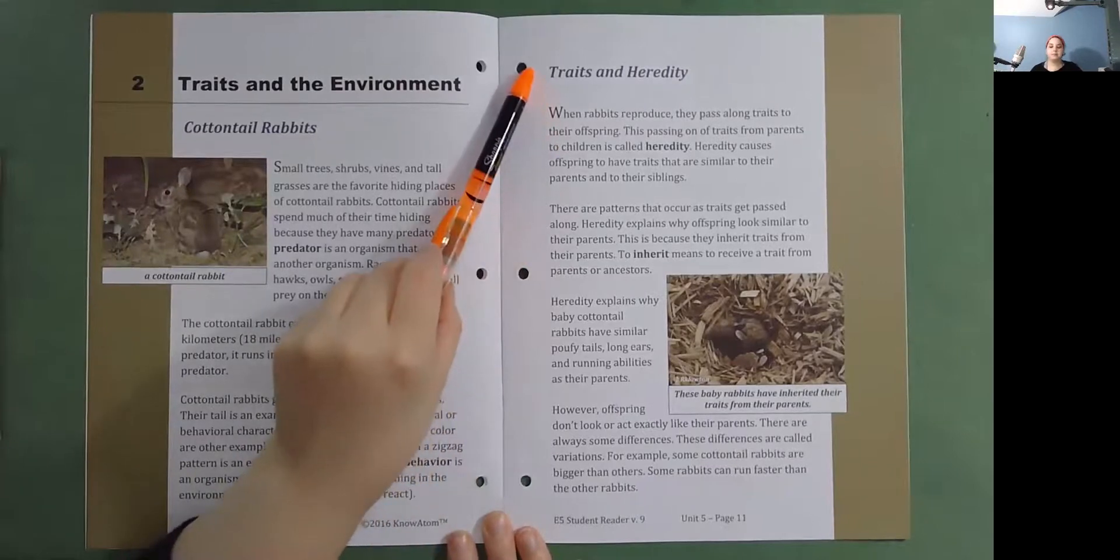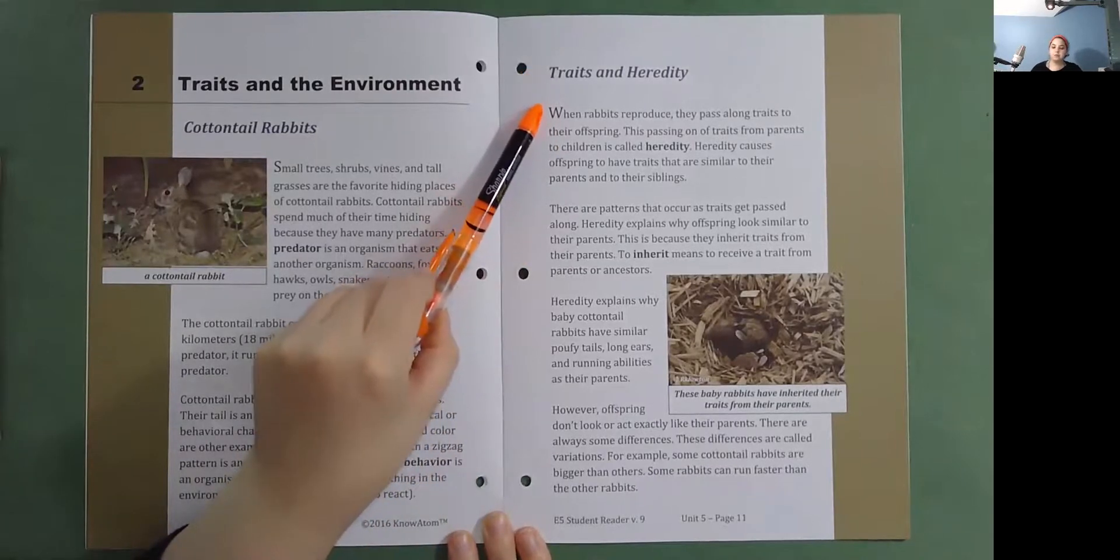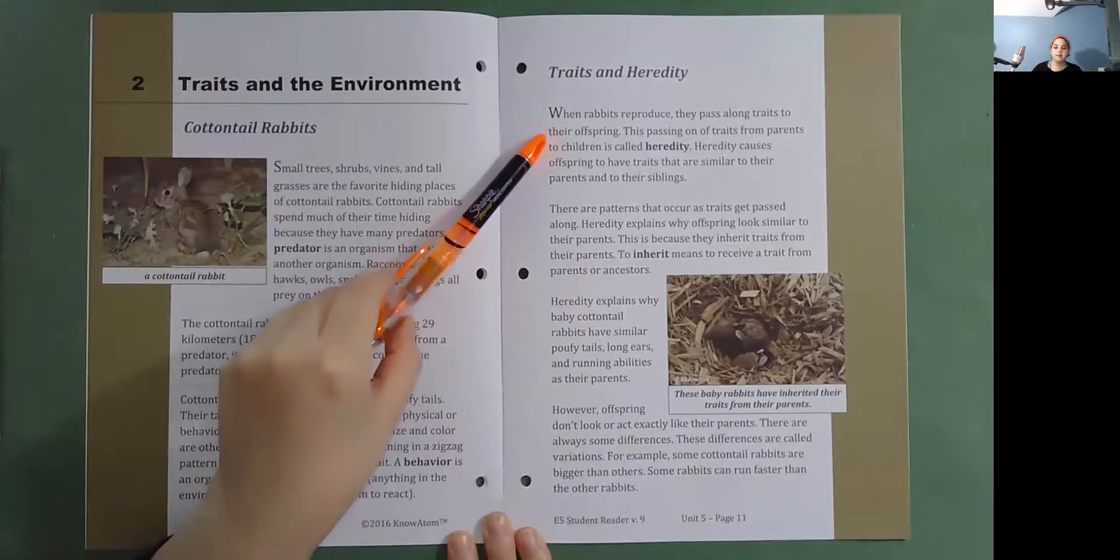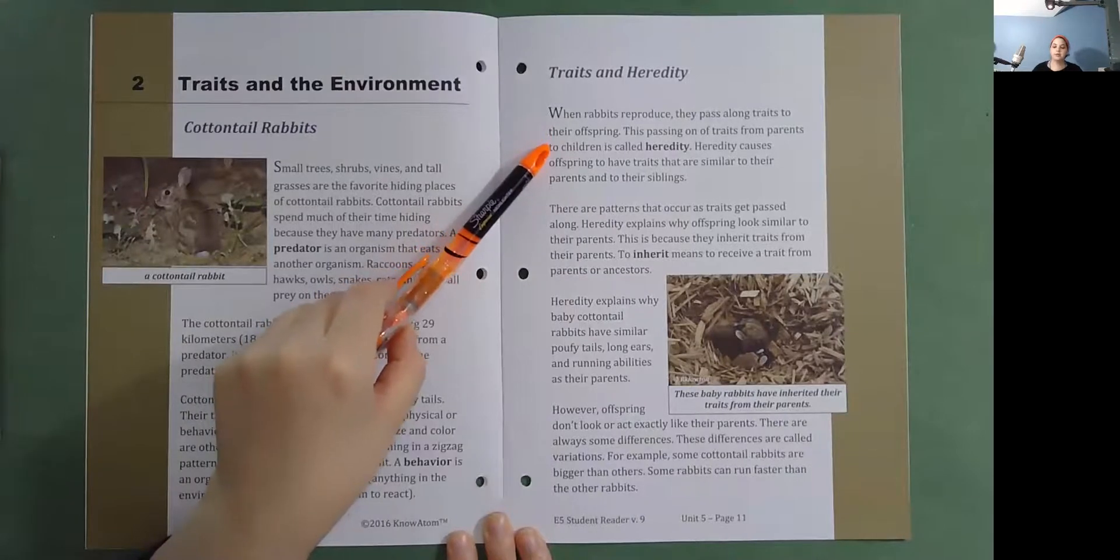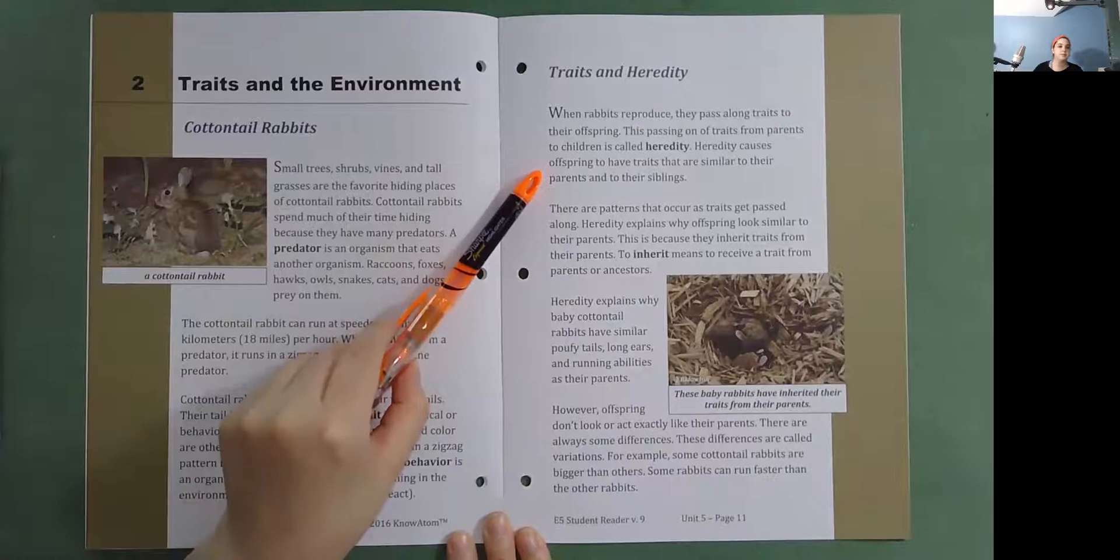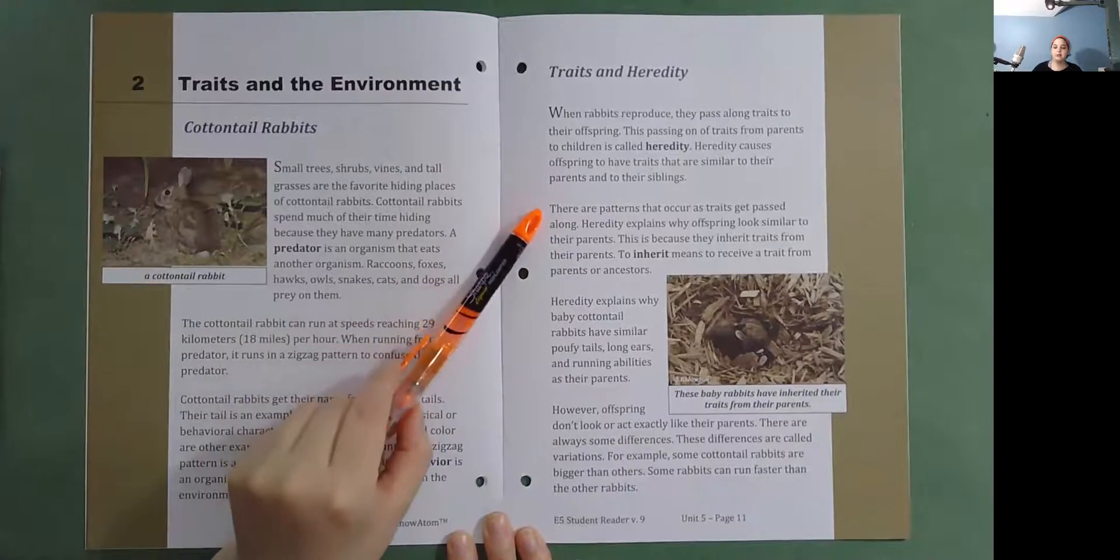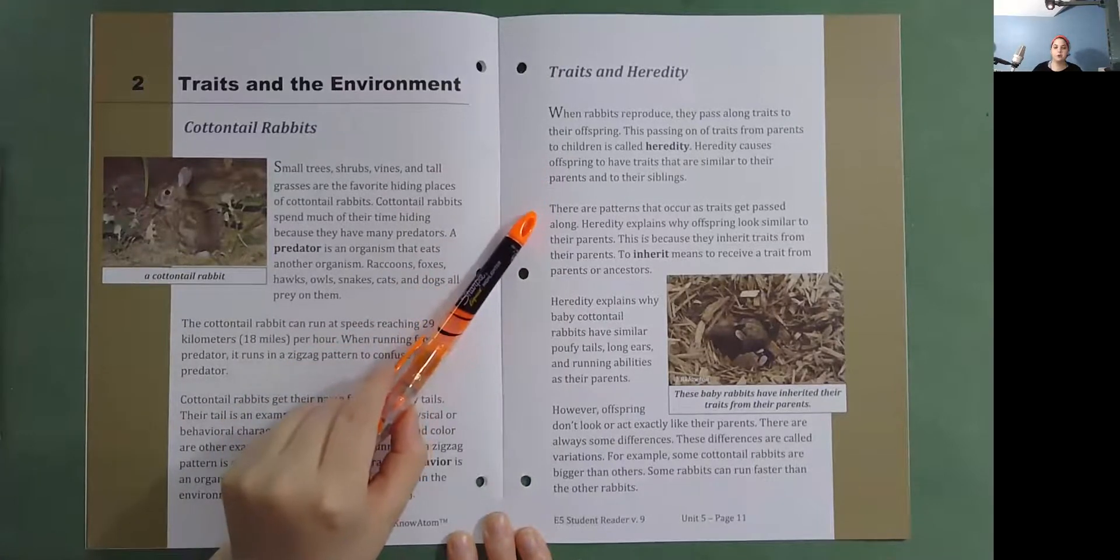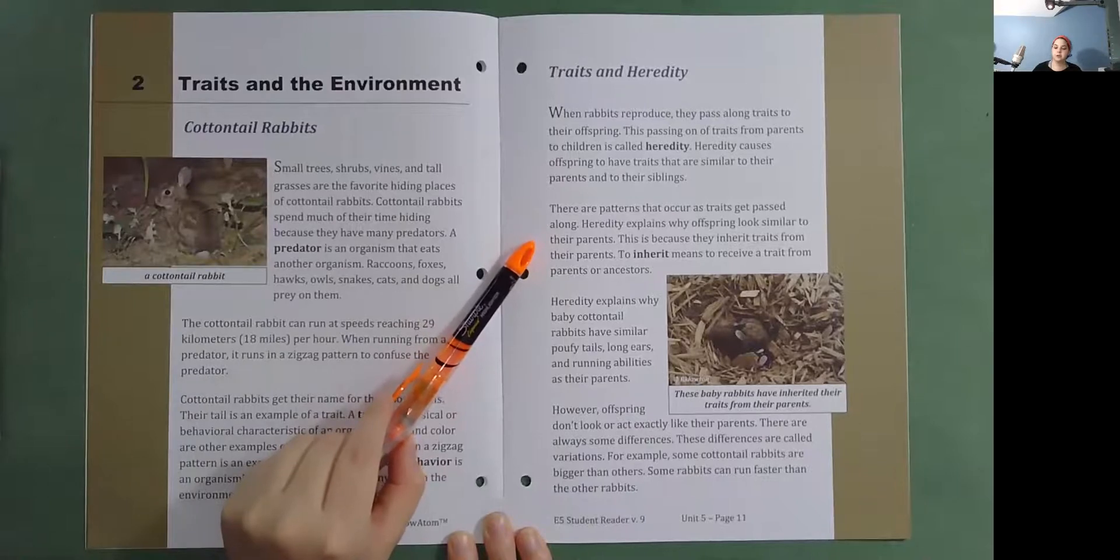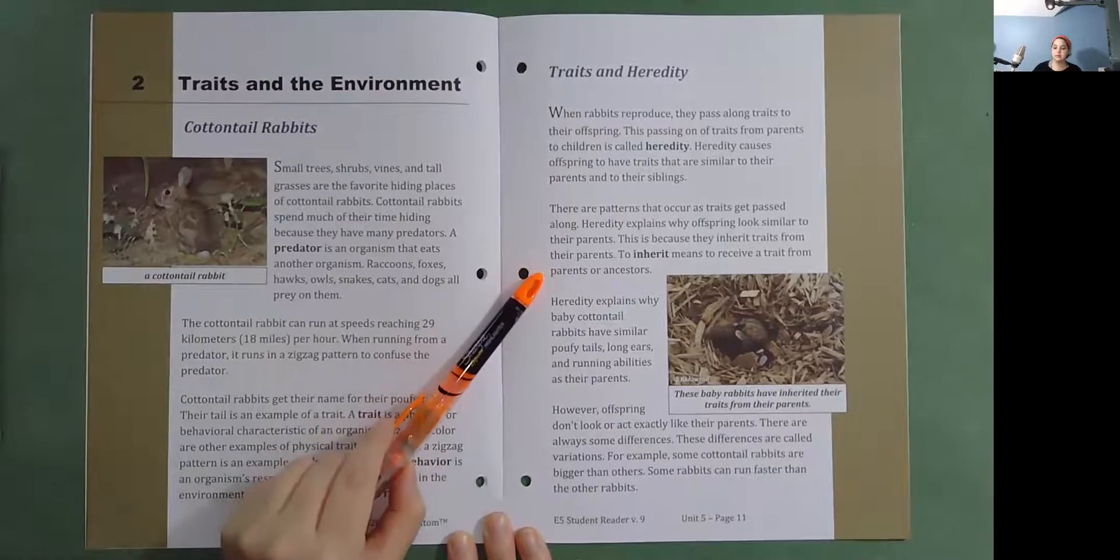Traits and Heredity. When rabbits reproduce, they pass along traits to their offspring. This passing on of traits from parents to children is called heredity. Heredity causes offspring to have traits that are similar to their parents and to their siblings. There are patterns that occur as traits get passed along. Heredity explains why offspring look similar to their parents. This is because they inherit traits from their parents. To inherit means to receive a trait from parents or ancestors.